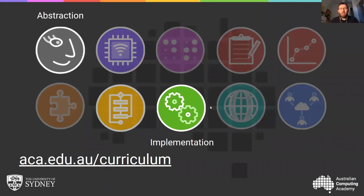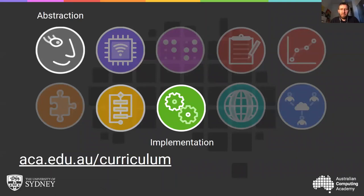Every time you're doing an example of coding, you're also doing an example of algorithms at the same time. That icon just to the left of implementation is algorithms. But you need to also make sure you're teaching algorithms separately from coding too. Kids should see examples of algorithms that are in code, but they should also see examples of algorithms that are not.